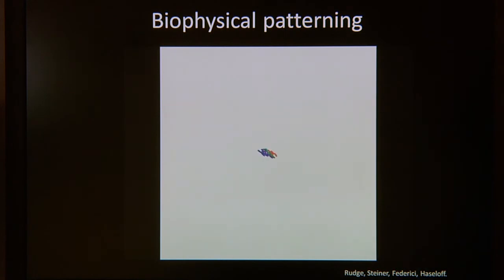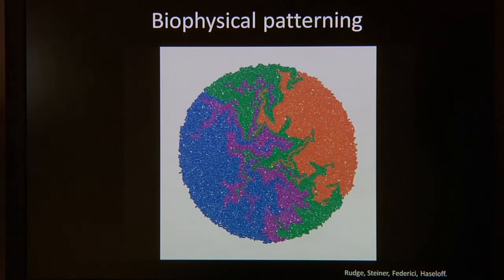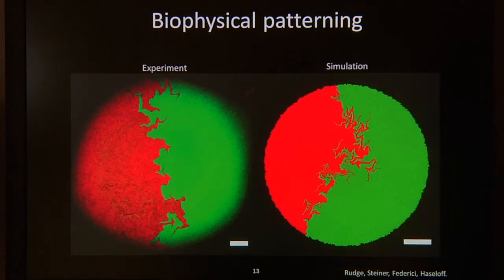So here we see a simulation of four cell colonies, shown in four different colors, as they grow adjacent to one another. And we can actually obtain good correspondence between experiments on the left and simulations on the right.